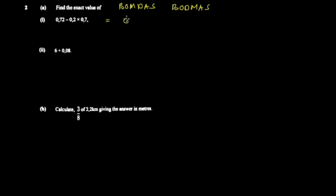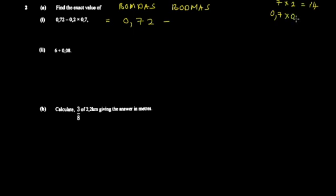To get the multiplication first: 0.72 minus (0.2 times 0.7). You multiply 2 by 7 to get 14, but since you're dealing with two decimal places total, you adjust — so 0.2 times 0.7 equals 0.14.